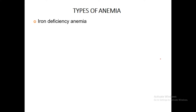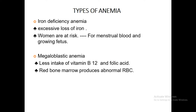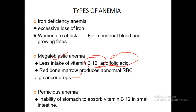Types of anemia: Iron deficiency anemia is caused by excessive loss of iron. Women are at risk due to menstrual blood loss and the demands of a growing fetus during pregnancy. Megaloblastic anemia is due to less intake of vitamin B12 and folic acid, causing the red bone marrow to produce abnormal RBCs. Patients taking cancer drugs are more prone to megaloblastic anemia. Pernicious anemia is the inability of the stomach to absorb vitamin B12. These are all classified as nutritional anemias.